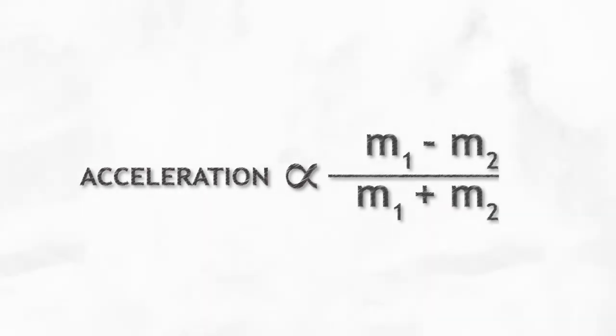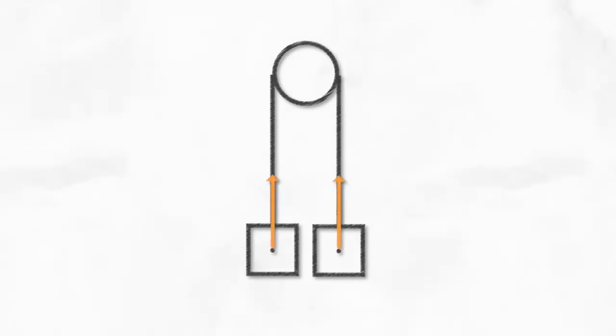To understand why, we need to draw something called a free body diagram, which pictures the forces or force components acting on a center of mass. Both masses only have two forces acting on them, tension and weight force.